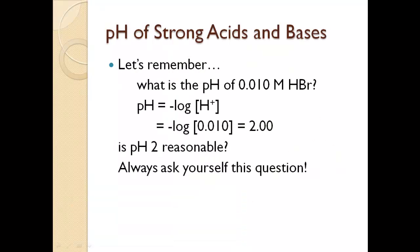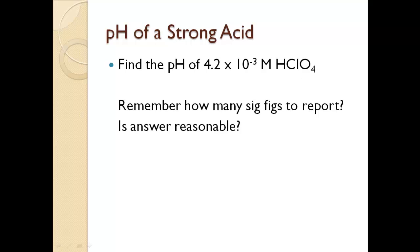Let's review pH calculations. For 0.010 M hydrobromic acid, pH = −log[H⁺] = −log(0.010) = 2. That's reasonable — hydrobromic acid is a very strong acid, so pH should be very low. For 4.2 × 10⁻³ M perchloric acid, pH = −log(4.2 × 10⁻³) = 2.38. That's also reasonable. Note the sig fig rule: two sig figs in your concentration means two decimal places in the mantissa, giving 2.38.